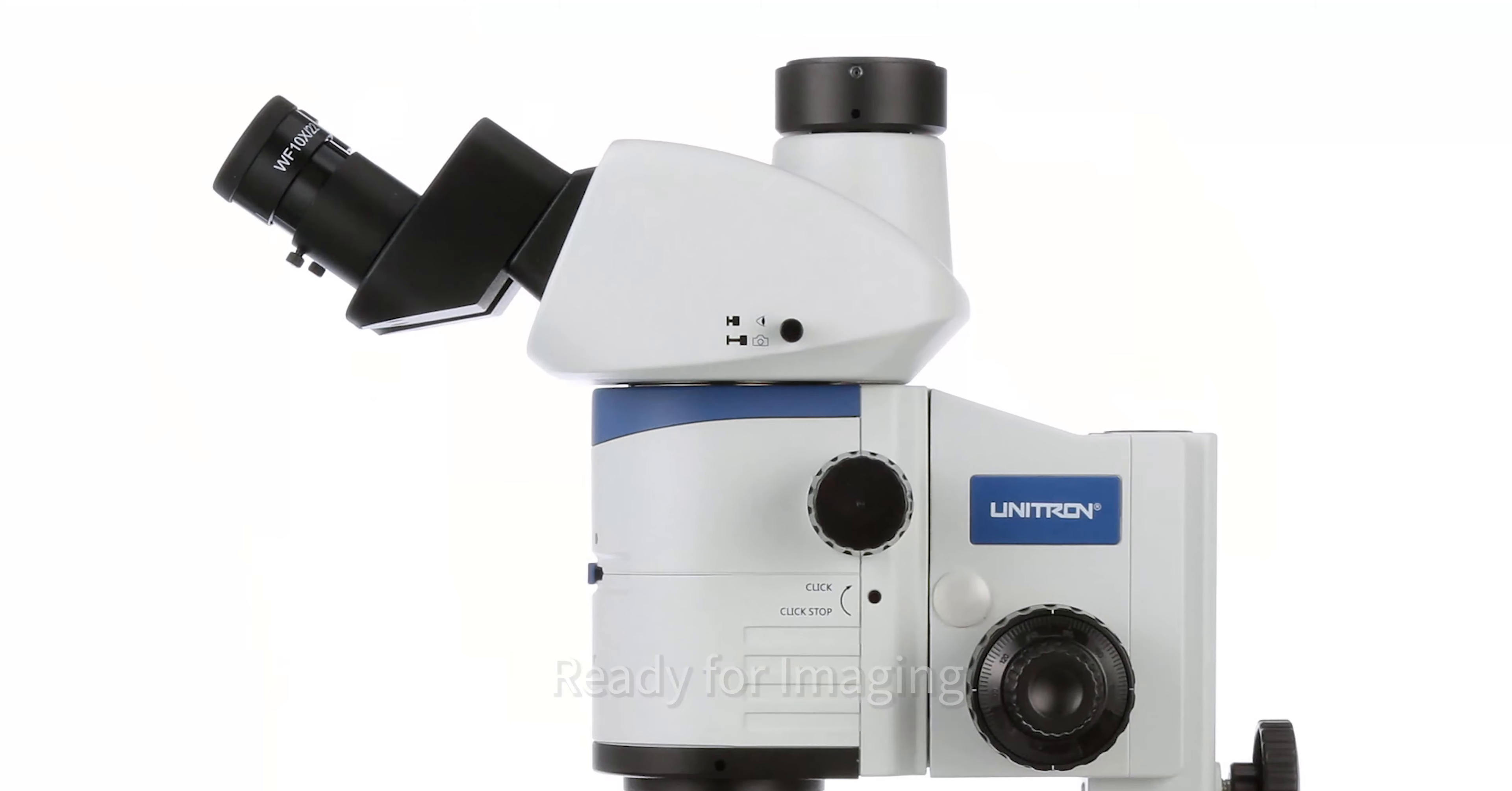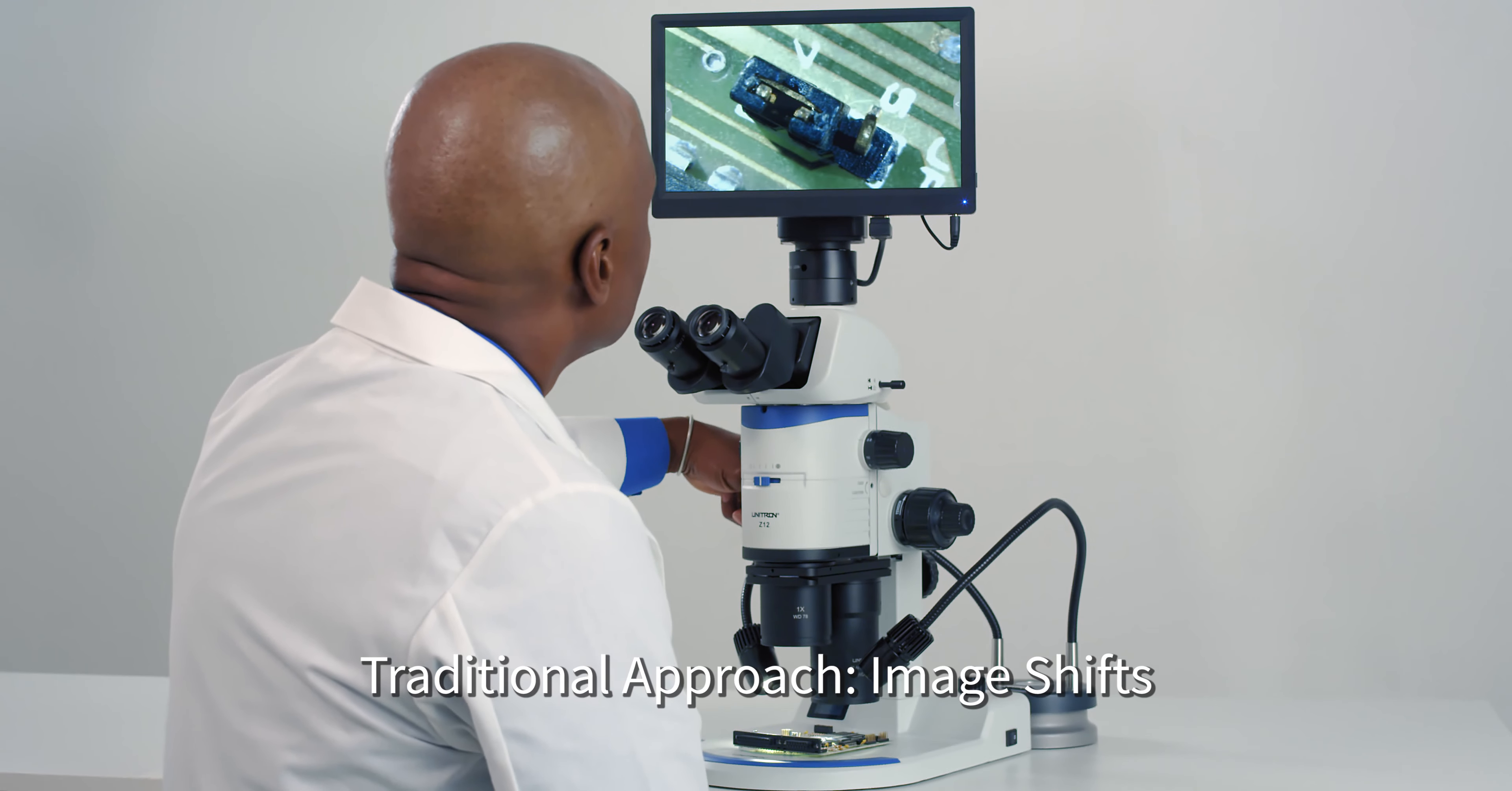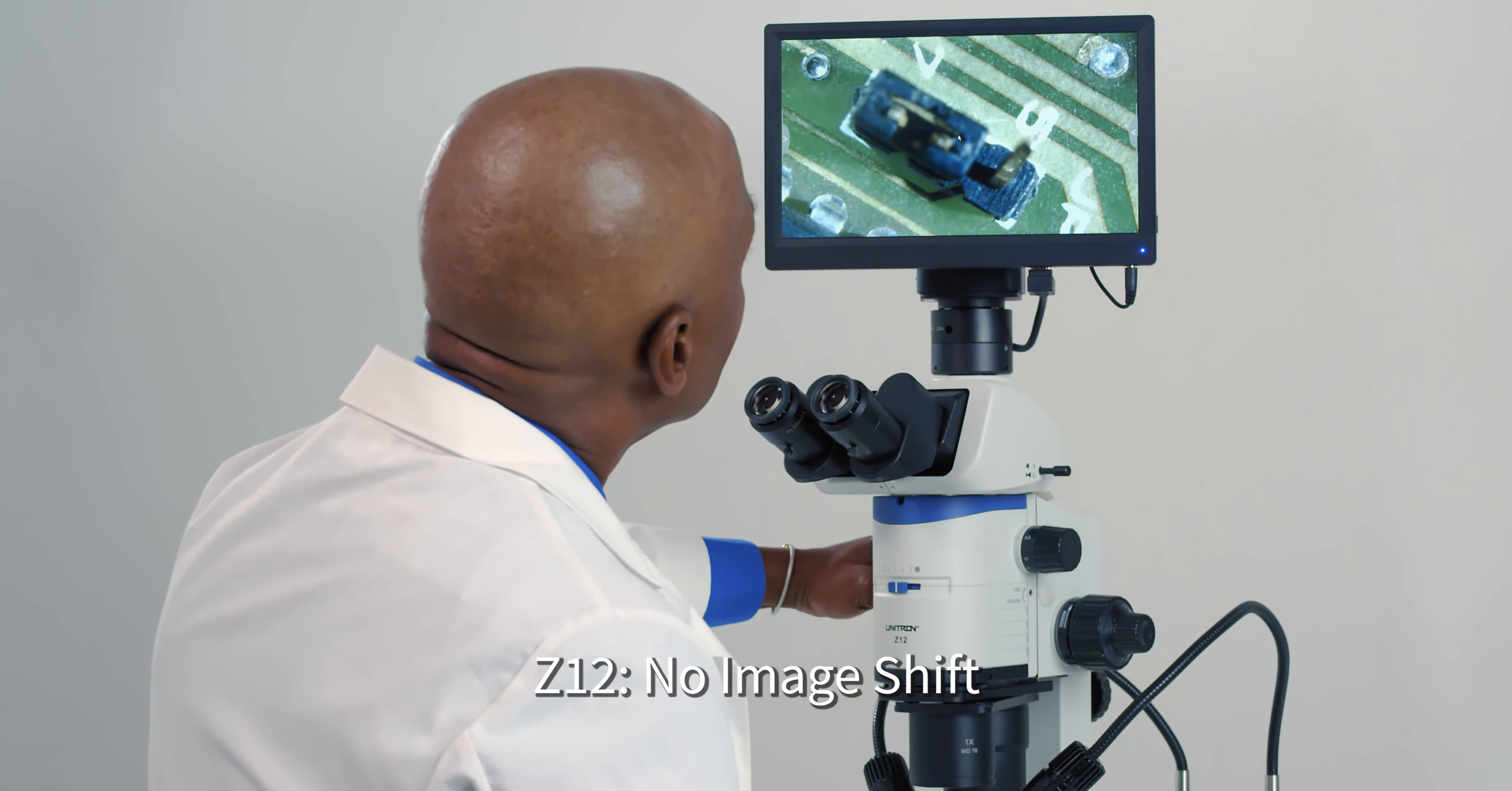The Z12 is ready for imaging. Just add a camera. The trinocular head allows you to image and use the eyepieces simultaneously. The optional two objective holder features an on-axis position, allowing you to focus in and out on a sample while the view remains vertically aligned.